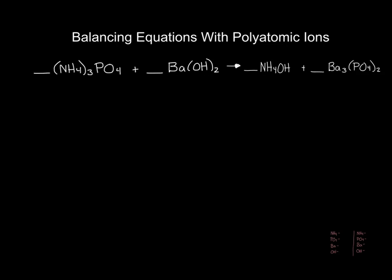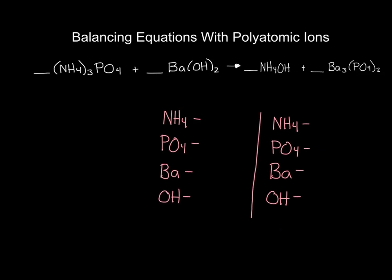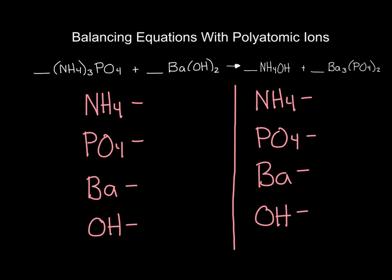Here is another example involving multiple polyatomics. Using the same trick, we divide the equation into reactants and products and count each polyatomic unit. Ammonium (NH₄) has three on the reactant side and one phosphate; there is one barium and two hydroxides. On the product side, we have one ammonium, two phosphates, three bariums, and one hydroxide.